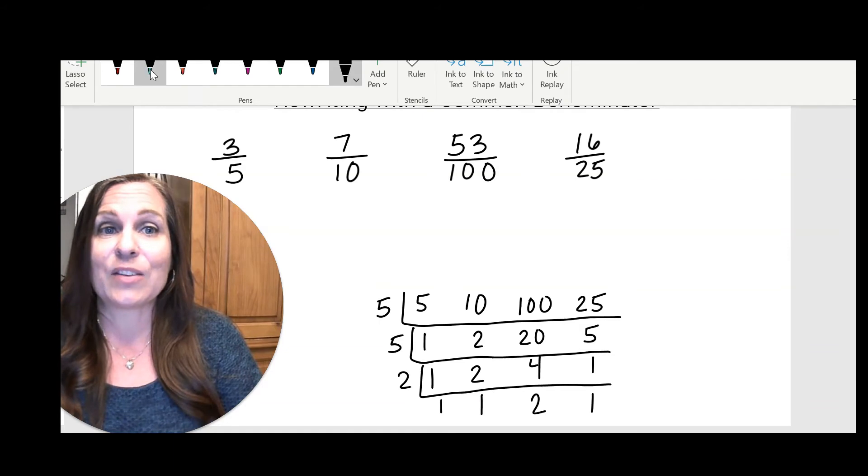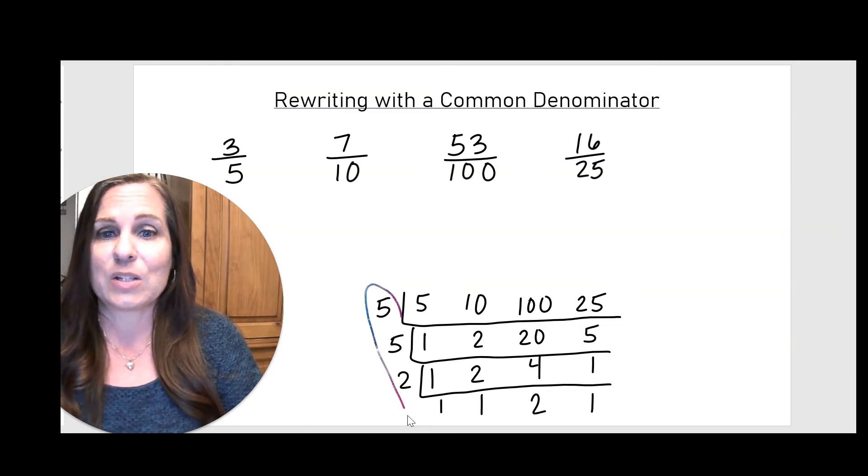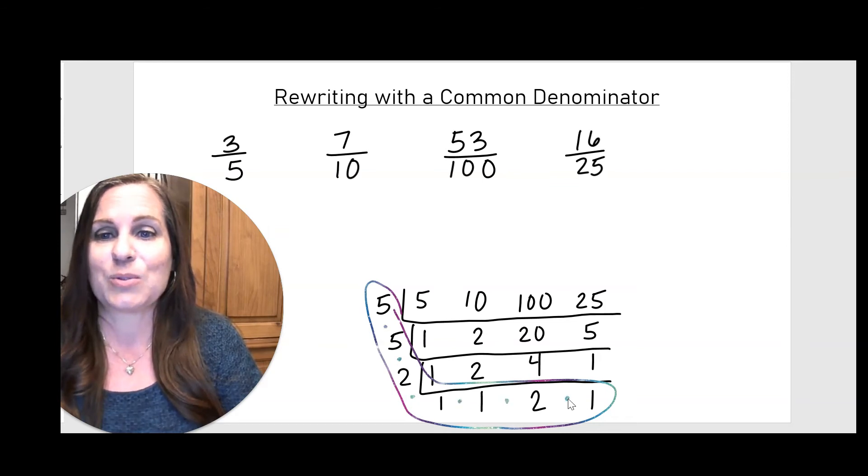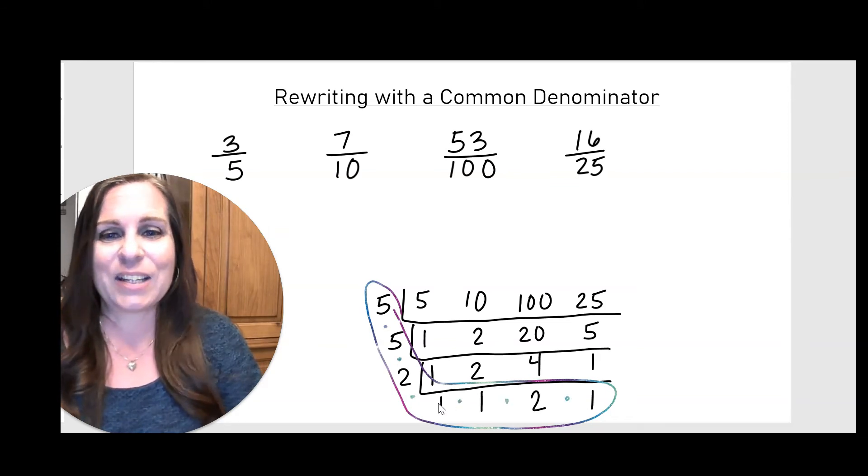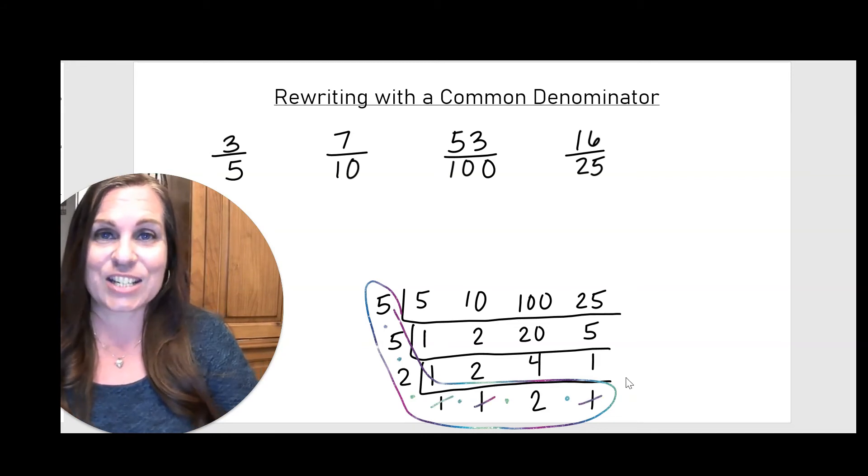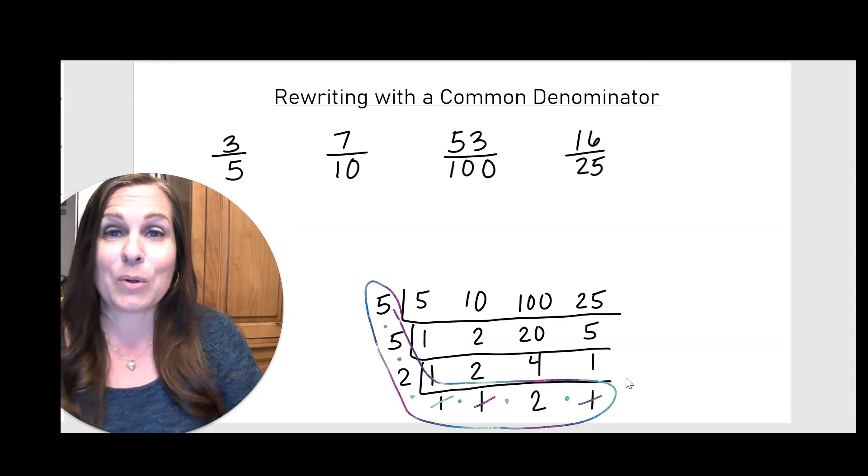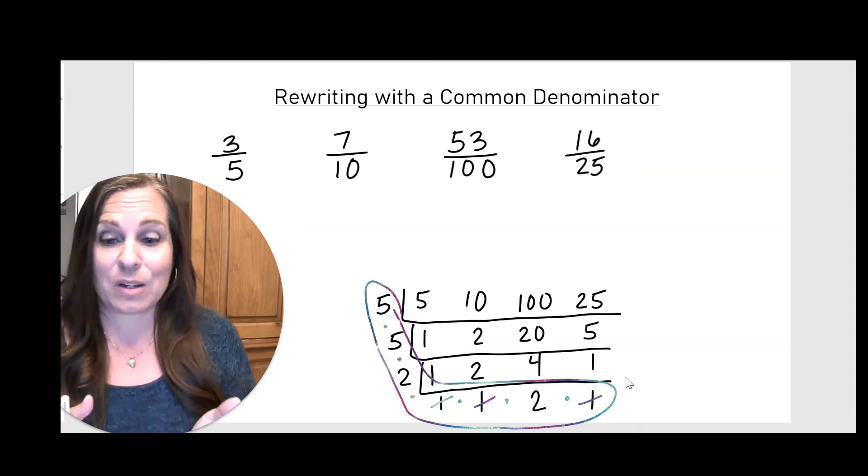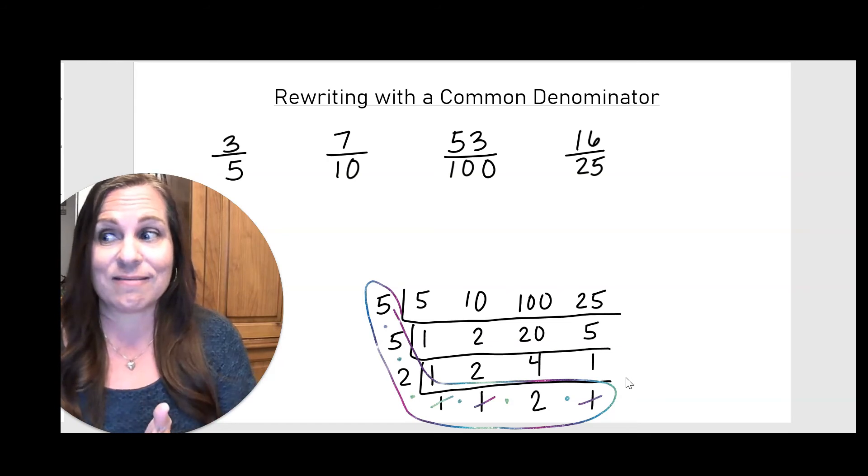To find the LCM from this, all I need to do is multiply the numbers that are on the side and the bottom. So 5 times 5 times 2 times 1 times 1 times 1 times 2 times 1. You don't really need to look at the 1s, right? Because multiplying by 1 doesn't change anything. 1 is the multiplicative identity, which means that when you start with a number and you multiply by 1, it equals that number that you started with.